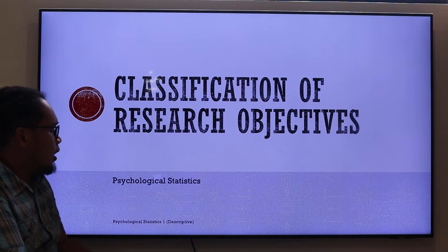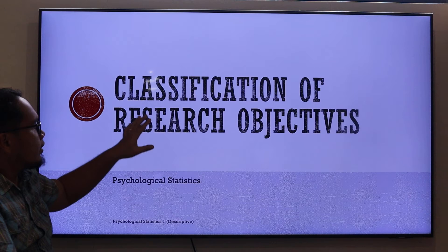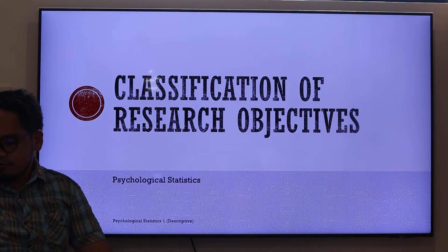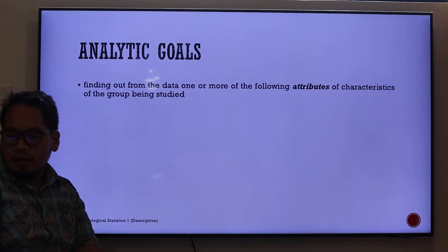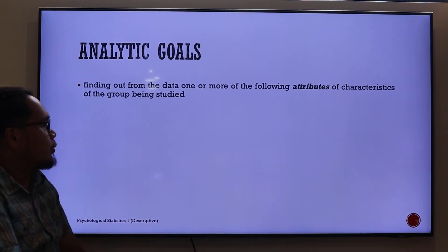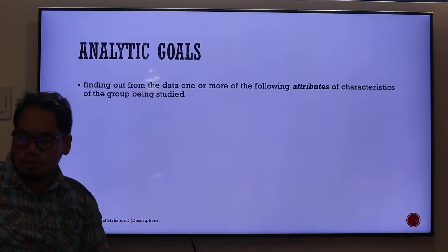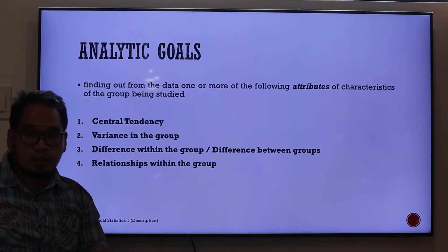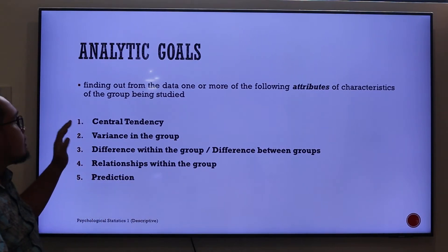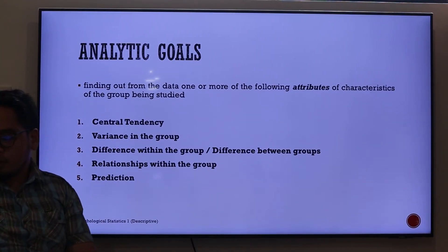Greetings everyone. We are continuing with our videos in psychological statistics and we're now on the topic of classification of research objectives — also called analytic goals. This is about finding out from the data one or more attributes or characteristics of the group being studied. We have five analytic goals: central tendency, variance in the group, difference within or between groups, relationships within groups, and prediction.